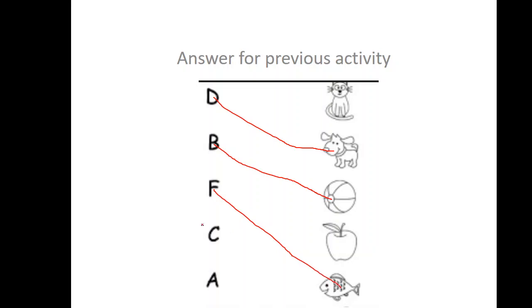And then letter C. C is for what? C is for cat. The cat is up there. You draw to the cat. Then A. A for apple. You draw from A to the apple. Good. That is it.